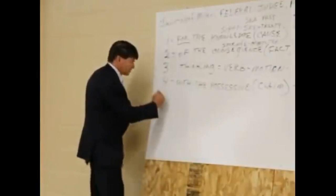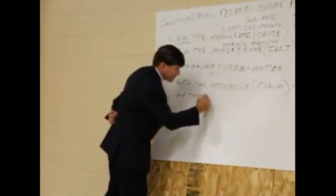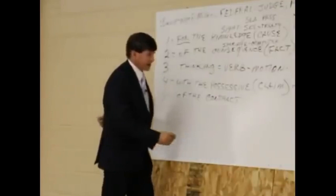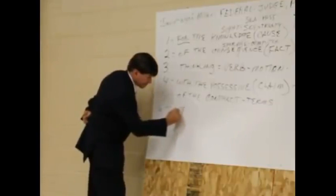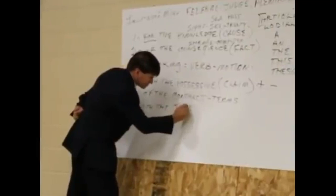The claim has to be defined. We're going to go here — five — of the contract. The contract has to be of the contract terms. Number six is: with the correct sentence structure, communication, parse, syntax, grammar.